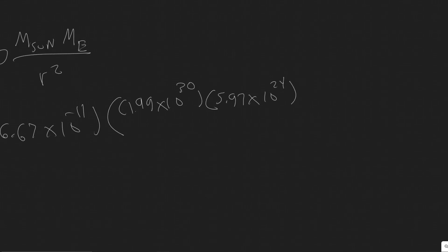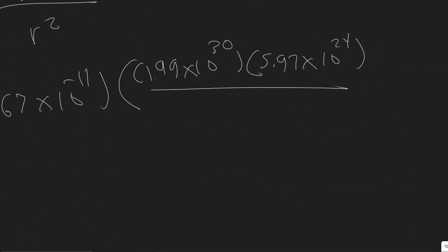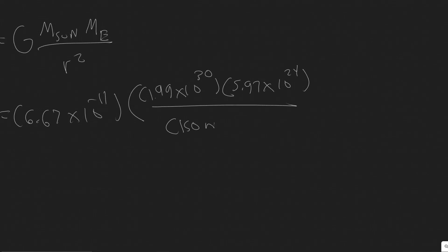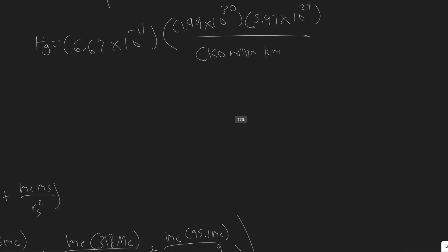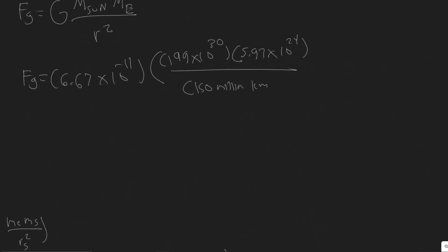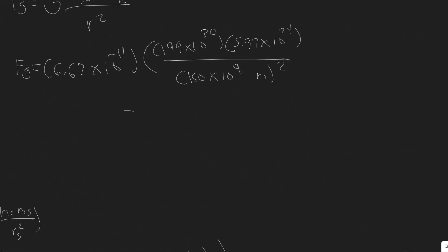The mass of the Earth is 5.97 × 10²⁴ kg. The Earth–Sun distance is just 150 million kilometers, so no subtraction needed. Converting: 150 × 10⁶ km × 10³ = 150 × 10⁹ meters. Remember this value is squared in the formula.